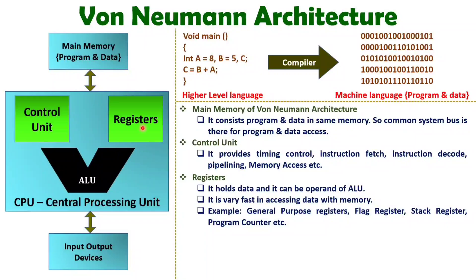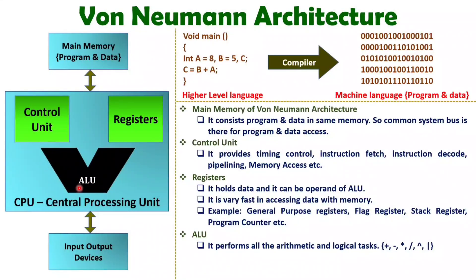Consider that these registers are used to execute programs and they serve as operands for the ALU — we execute programs inside the CPU using these registers. When we talk about the ALU, it performs all arithmetic and logical operations: multiplication, division, addition, subtraction, as well as logical operations like AND, OR, XOR, and NOT.